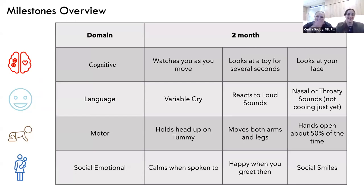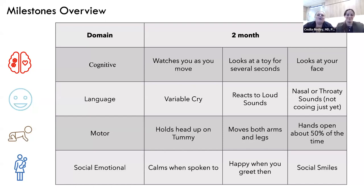At two months, cognitive milestones include: your baby will start watching you as you move, and will look at toys for several seconds — we call it habituating. If you put a toy in front of them they'll look, and if you swap it for a new one they'll look at that too. Around two months, they'll also start looking directly at your face — one of the best first milestones.